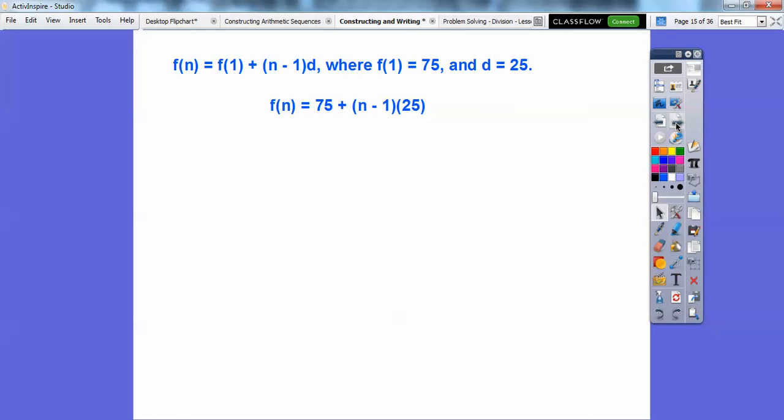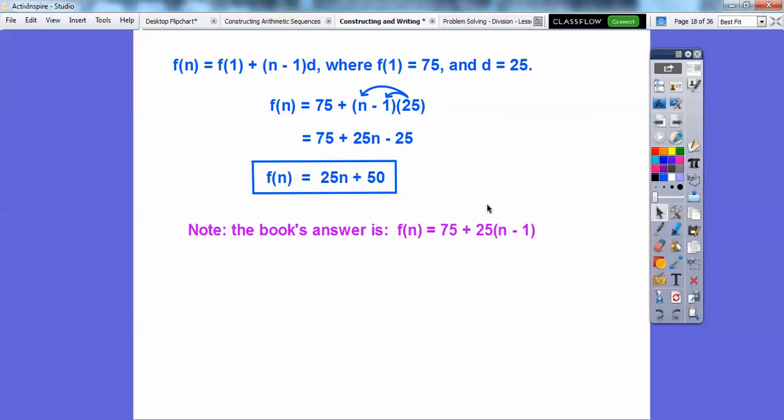Your book would like you to leave it like that, but I like to distribute that 25 through because when you clean it up, it looks better. 75 minus 25 is 50, so 25n plus 50 is our nth term. Your book would probably write it with the 25 in front, but I think it looks cleaner like this. If it said find your 90th term, no problem. Just plug in 90 right there, 25 times 90 and then add 50 to that.